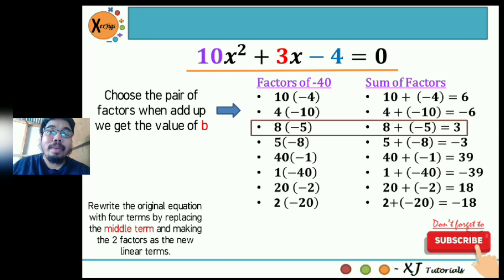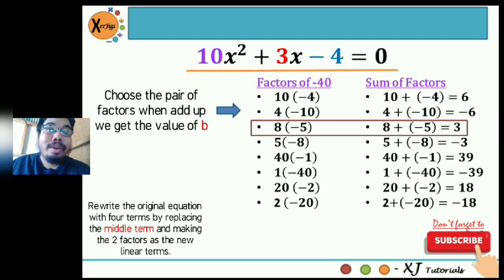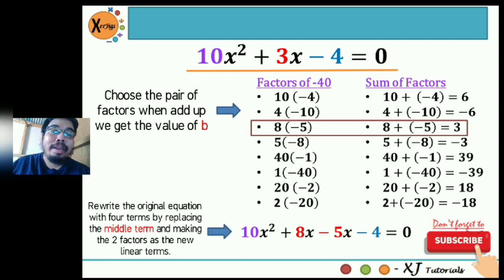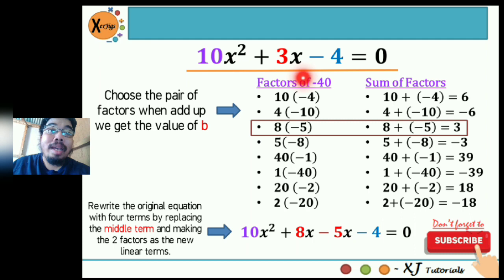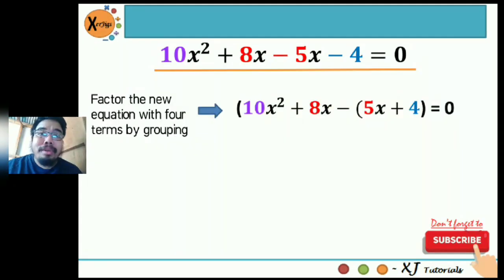The next step is to rewrite the original equation with four terms by replacing the middle term and making the two factors the new linear terms. We replace positive 3x with the two factors: 8 becomes 8x and negative 5 becomes negative 5x. So the new equation is 10x squared plus 8x minus 5x minus 4 is equal to zero.